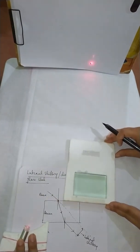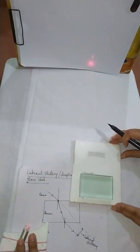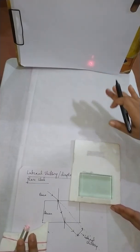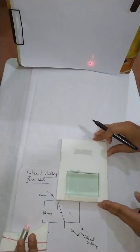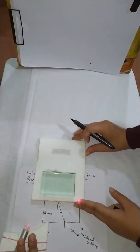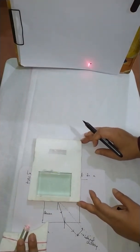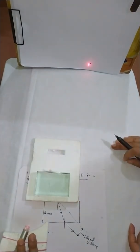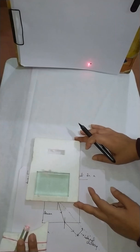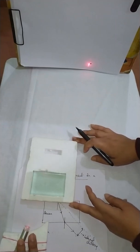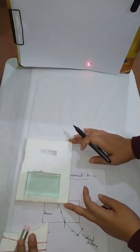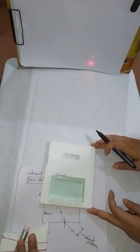But if the angle changes, then there will be a change produced in the lateral displacement. At the black dot, the laser is just focused. Now you see the difference - that means there is the occurrence of lateral shifting. I hope this is clear. You see I'm doing it fast, you can just understand.